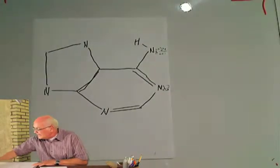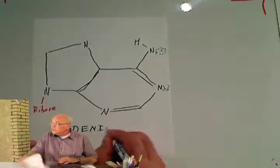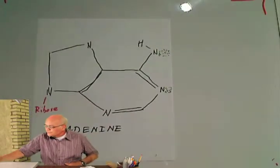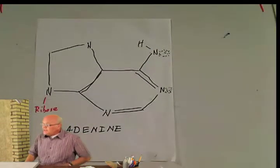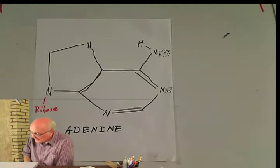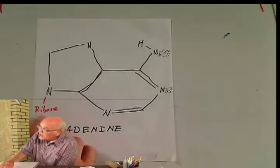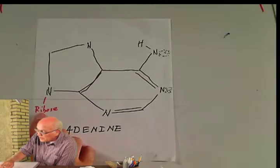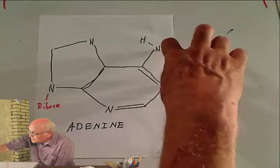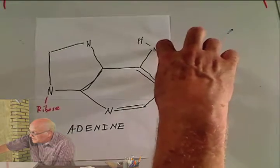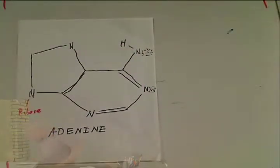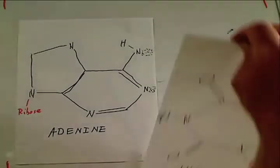Let's take a look at adenine. Adenine is flat — the ribose attaches on this part, and the hydrogen bonds come against this part. Adenine wants to form a relationship with thymine.